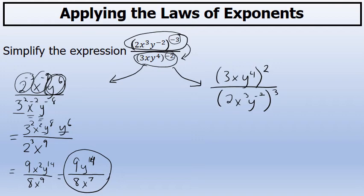Using the second method, I moved the quantities in the numerator and denominator to the other side of the fraction bar because they each had a negative exponent. Now I will apply the power of two to all three factors in the numerator, and the power of three to all three factors in the denominator.